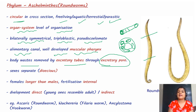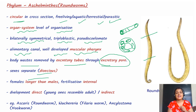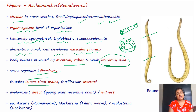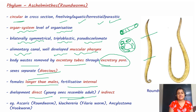Sexes are separate — starting from Aschelminthes, sexes are separate, whereas in Platyhelminthes they were not. Females are longer than males, fertilization is internal, and development is direct, where the young ones resemble the adult. There may also be indirect development.